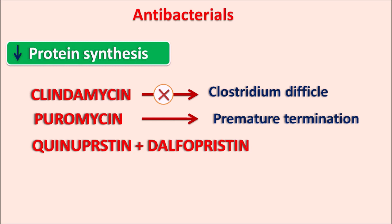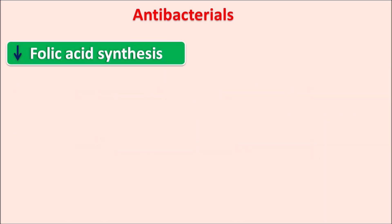Quinupristin and dalfopristin are two drugs given in combination at a ratio of 30:70 to inhibit bacterial protein synthesis. Linezolid also inhibits the formation of the 70S ribosome within the bacteria, thereby inhibiting the initiation steps of protein synthesis. In total, these seven categories of drugs act on protein synthesis within the bacteria.